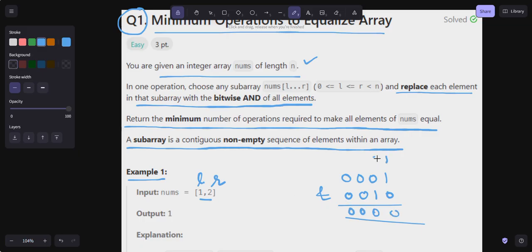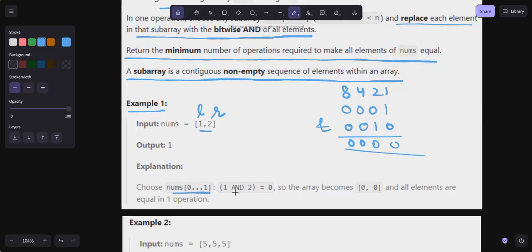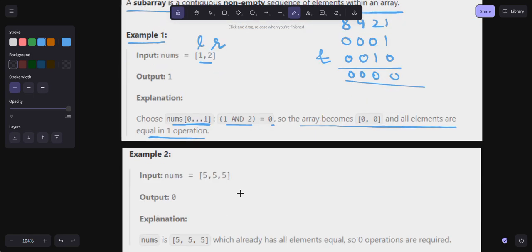This bit value is 1, this is 2, this is 4, this is 8. So this is 0. Choose nums[0...1]: 1 AND 2 equals 0, so the array becomes [0, 0] and all elements are equal in one operation.